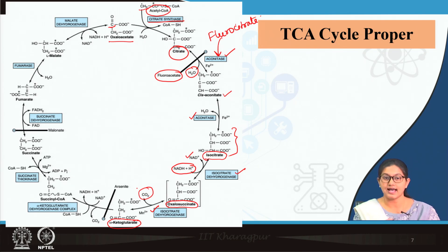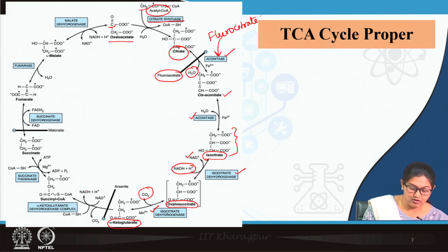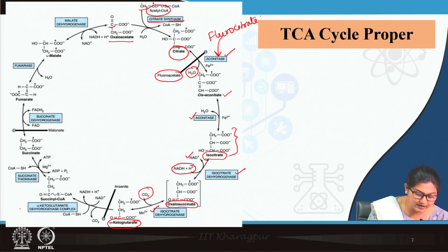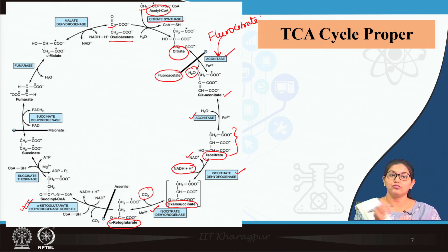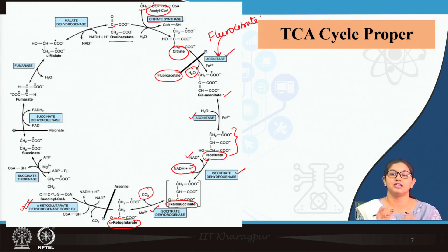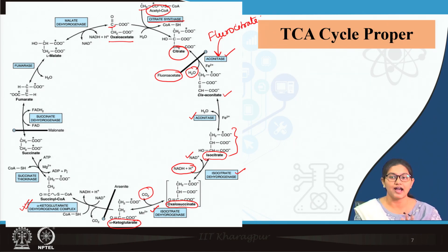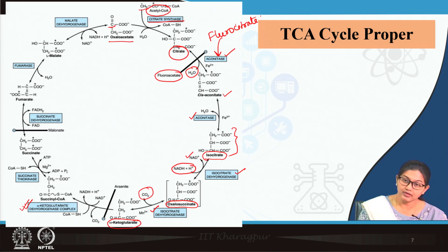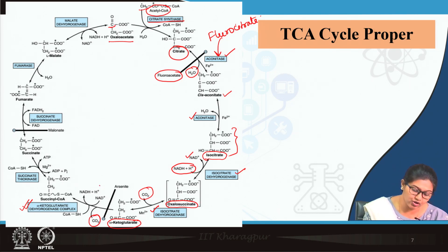Alpha-ketoglutarate undergoes another step of oxidative decarboxylation with the help of the enzyme alpha-ketoglutarate dehydrogenase. This enzyme complex is similar to pyruvate dehydrogenase complex — the whole enzyme reaction is analogous, with 3 different enzymes, 5 different prosthetic groups, and 4 vitamins required for enzyme activity. Because this is a decarboxylation reaction, there is release of carbon dioxide and also formation of NADH.